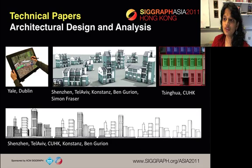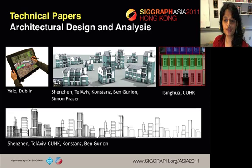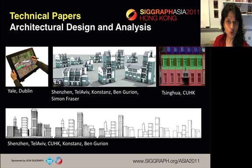In the session on Architectural Design and Analysis, we have a new system that lets you do architectural modeling in context. An algorithm for retargeting irregular 3D architecture models while preserving their structure. A paper that introduces adaptive partitioning of urban facade datasets to derive a hierarchical representation of 3D facades. And a method of summarization and abstraction of complex architectural drawings based on gestalt tools.